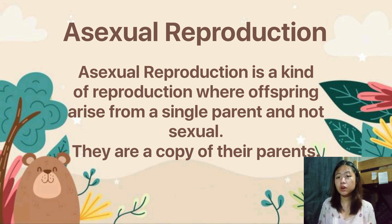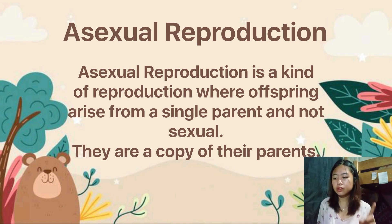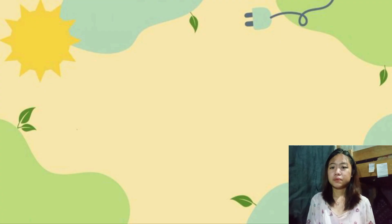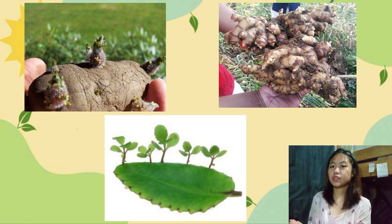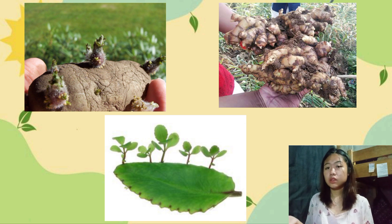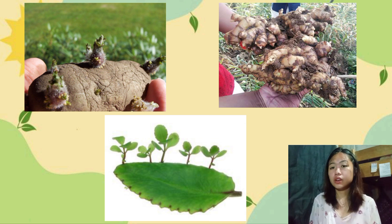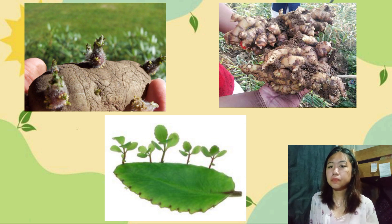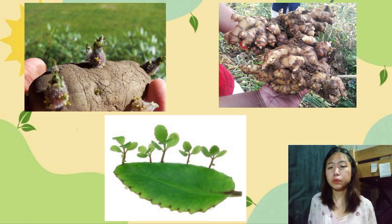Asexual reproduction is a mode of reproduction that does not entail the union of sex cells or gametes. It doesn't involve two parents — only one parent — unlike sexual reproduction, wherein male and female are necessary to produce a new organism. Let's look at more examples: a potato crop, a ginger crop, and the katakataka plant or leaf. I want you to get a notebook or any paper and write the observations you find in these pictures.